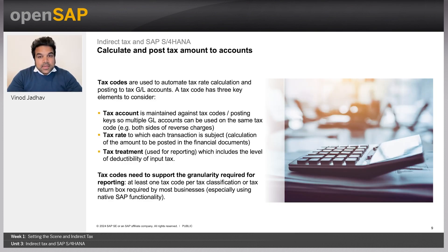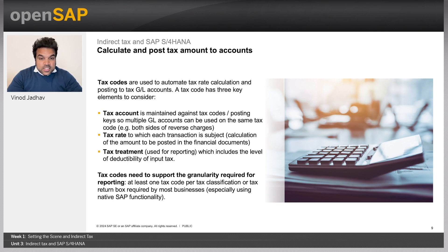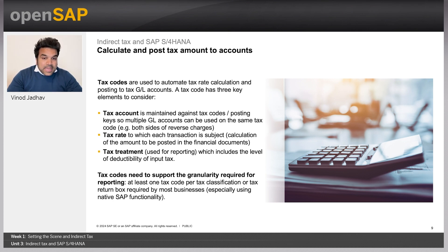Calculate and post tax amounts to accounts. Tax codes are used to automate tax rate calculation and posting to tax GL accounts. A tax code has three key elements to consider: tax accounts maintained against tax codes; posting keys to multiple GL accounts can be used on the same tax code — for example, both sides of reverse charges; tax rate to which each transaction is subject, and the calculation of the amount to be posted in the financial documents; and also tax treatment used for reporting, which includes the level of deductibility of input tax. Tax codes need to support the granularity required for reporting, with at least one tax code per tax classification or tax return box required by most businesses.